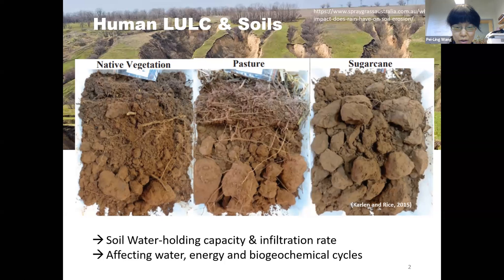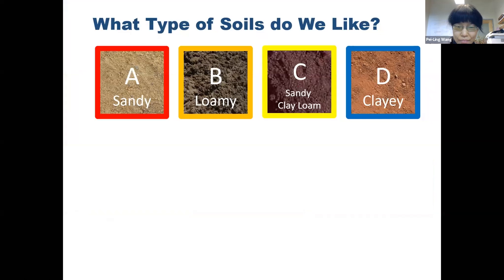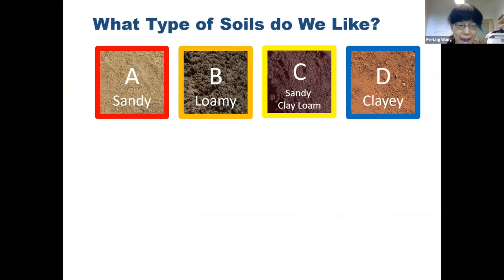That's why we would like to fill in this missing piece by putting a soil degradation model in. The first question we ask is: what type of soils do we have? To make the question easier, we group different types of soil into four groups based on hydrological potential. Group A is more sandy, and soil group D is more clay.